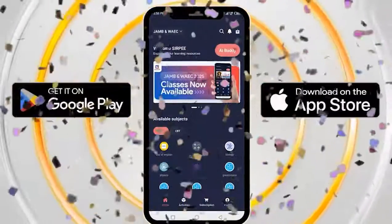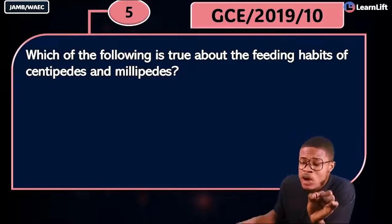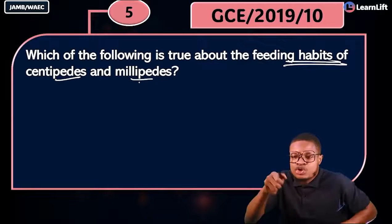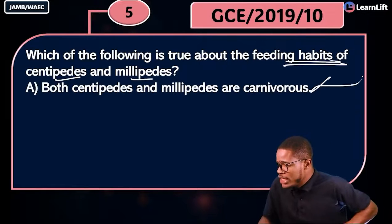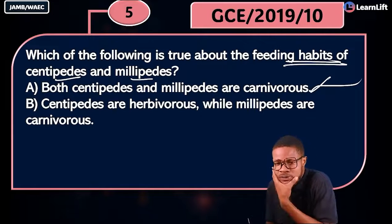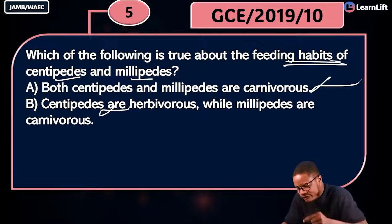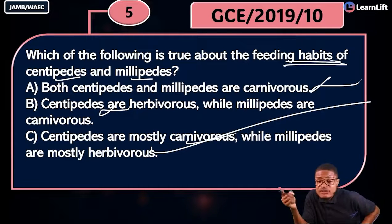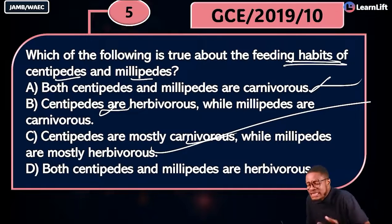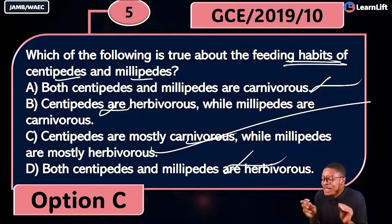GCE 2019 question: 'Which of the following is true about the feeding habits of centipedes and millipedes?' Option A — both are carnivorous — is wrong. Option B — centipedes are herbivorous while millipedes are carnivorous — is wrong. Option C — centipedes are mostly carnivorous while millipedes are mostly herbivorous — is correct. Option D — both are herbivorous — is wrong. The answer is option C.